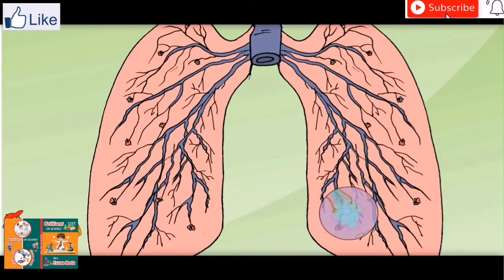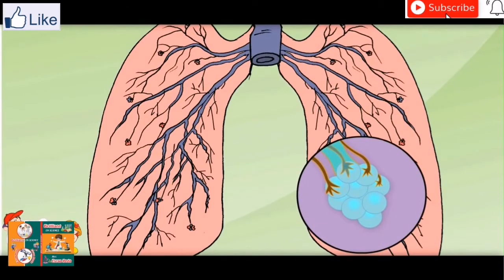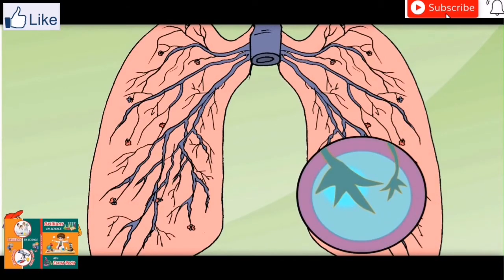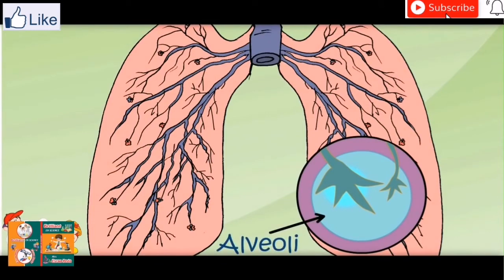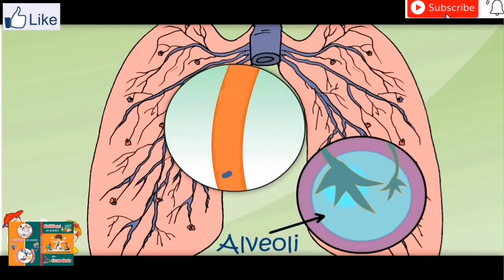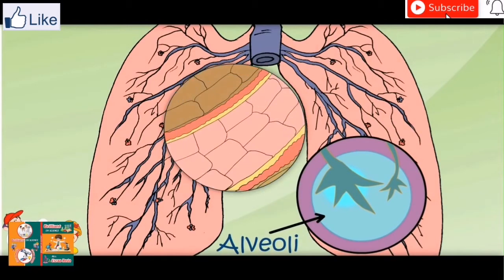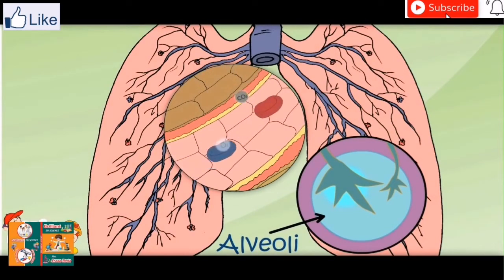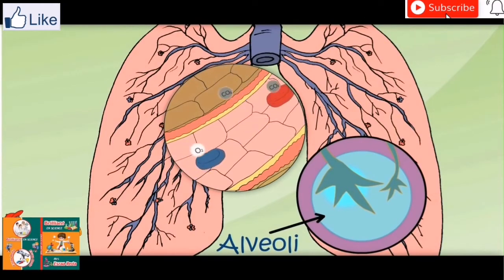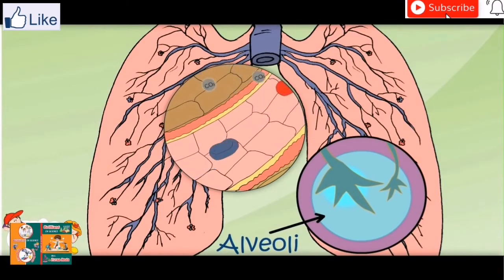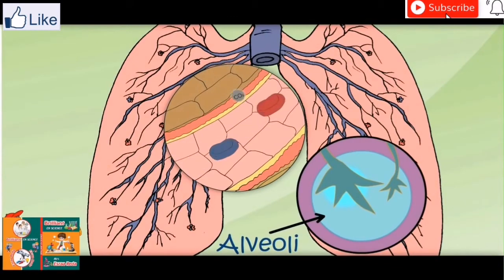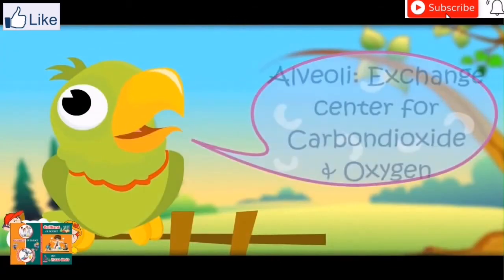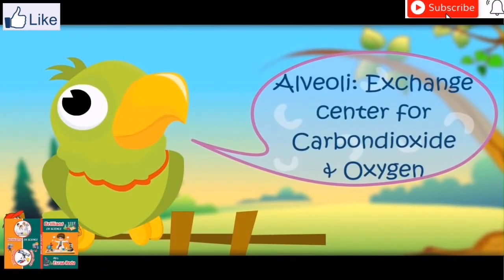What are these small balls? You can see them because of magic. These are called alveoli. From here, oxygen goes to the blood and carbon dioxide comes in from the blood to the lungs. This is the exchange point of gases — carbon dioxide comes in from the blood and oxygen goes to the blood. In this way, oxygen is spread through the whole body. Alveoli — exchange center for carbon dioxide and oxygen.